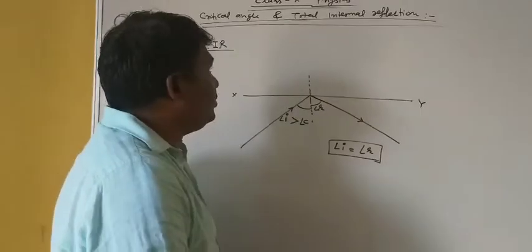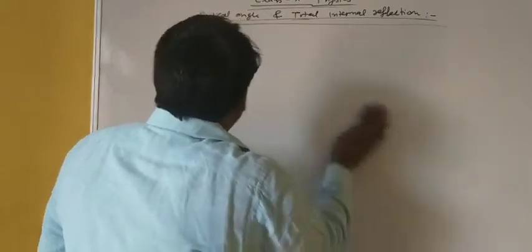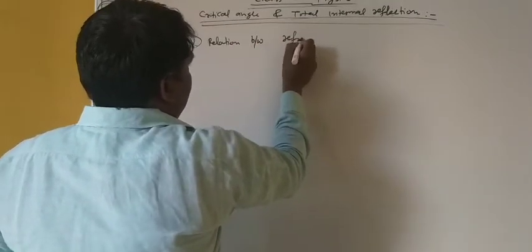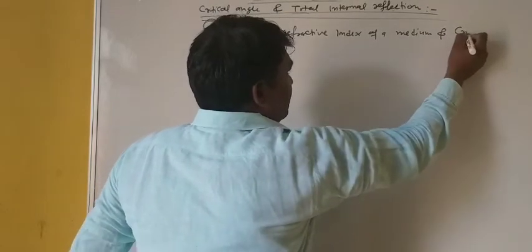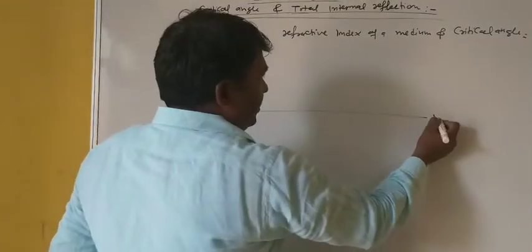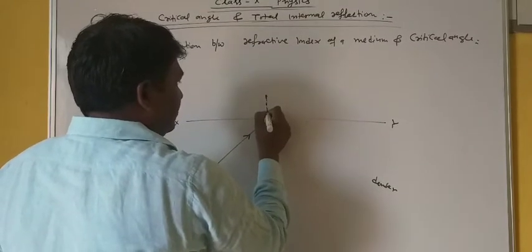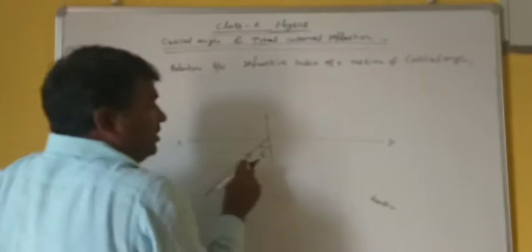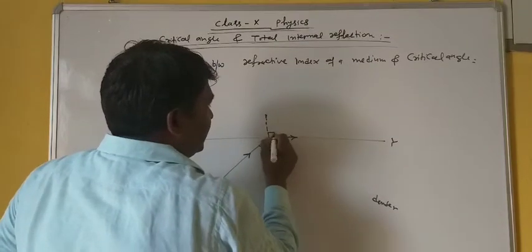Now let's see how to establish the relation between refractive index and critical angle. Suppose this is an interface — this is your denser medium. A light ray is coming from the denser medium, incident at some angle — let it be the critical angle C. If this is the critical angle, then the refracted ray becomes parallel to the interface, meaning this angle is 90 degrees.